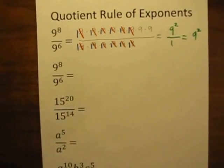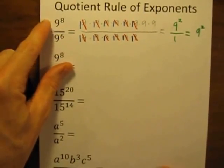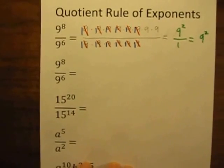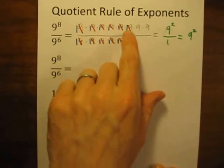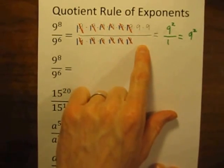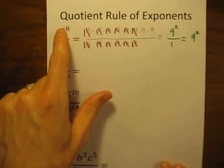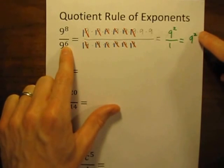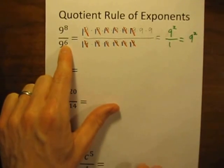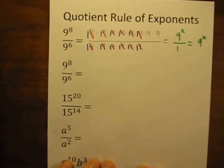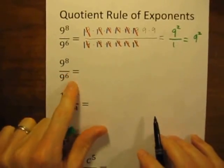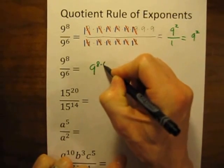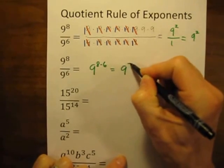So when we write 9 to the 8th power divided by 9 to the 6th power in expanded form and cancel all the 9's that are directly above and below one another, we're left with just 2 nines on top and no nines on the bottom, which is 9 squared. You might notice: 9 to the 8th power divided by 9 to the 6th power gives an exponent of 2 — we're just subtracting them. All you really need to do is say 9 to the 8th over 9 to the 6th simplifies to 9 to the 8 minus 6 power, which is 9 to the 2nd power.